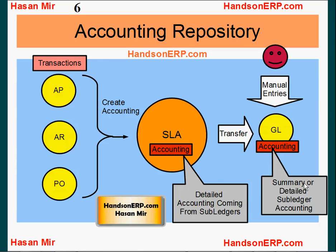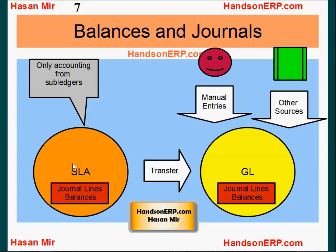The official source of truth for subledger accounting information is your subledger accounting module. It records the journal lines created as a result of transactions sitting in subledgers — like invoices in payables and transactions in receivables. The subledger accounting module contains the actual representation of accounting for those transactions: it has journal lines and it has balances, just like how you have in GL. In the general ledger module you have lines and when you post the journal, balances are created — similarly, subledger accounting module records lines as well as balances.